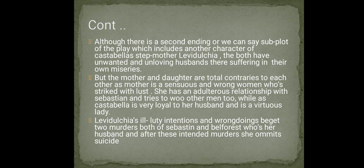There is also a subplot involving another character, Castabella's stepmother, Levidulcia. Both Levidulcia and Castabella have unwanted and unloving husbands and suffer in their own miseries. However, they are total contraries when it comes to sensual pleasures. The mother is involved in sensual wrongdoing and is struck by lust — in an adulterous relationship with Sebastian and trying to woo other men. Castabella, by contrast, is loyal and virtuous. Levidulcia's wrongdoings lead to two murders — Sebastian and Belforest — after which she commits suicide.